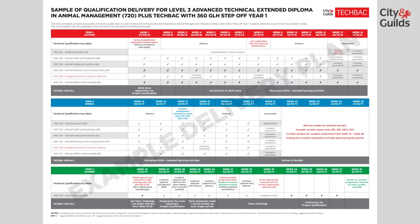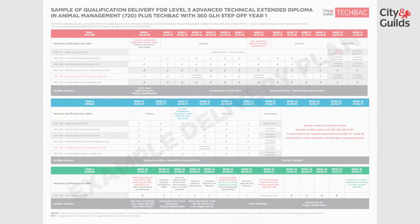In Term 3, learners will continue compiling their evidence for their work experience portfolio, ready for upload at the end of that term. Should learners wish to finish at this stage, they can step off and will have achieved their Technical Certificate in Animal Management. For learners that wish to progress, they will carry on into the second year.